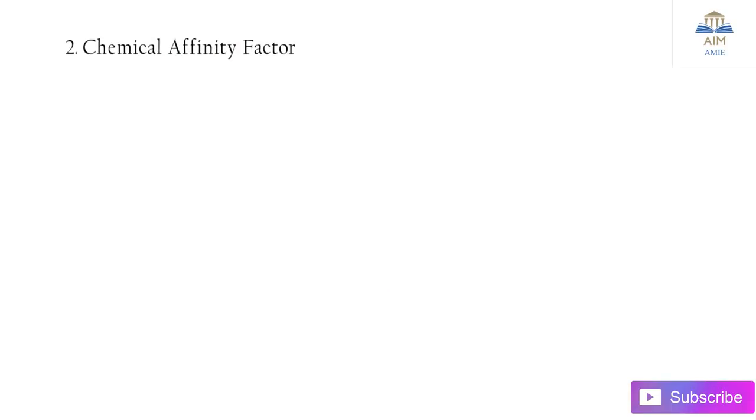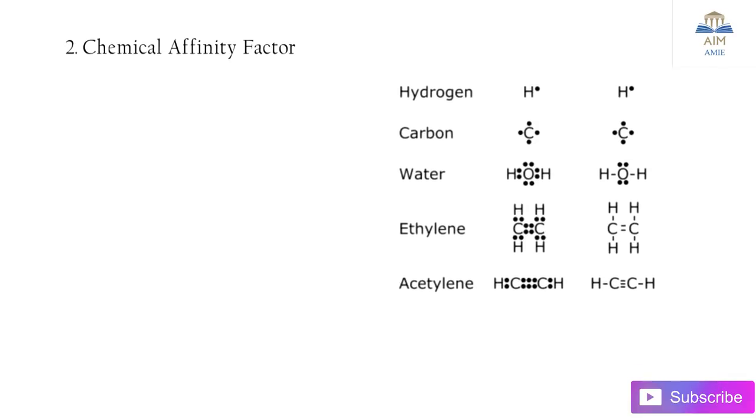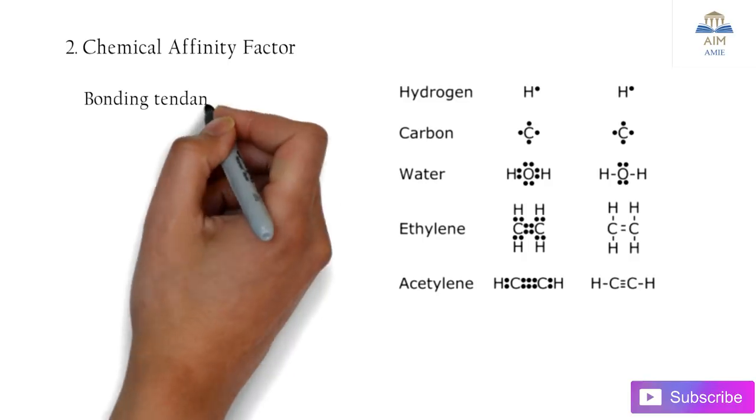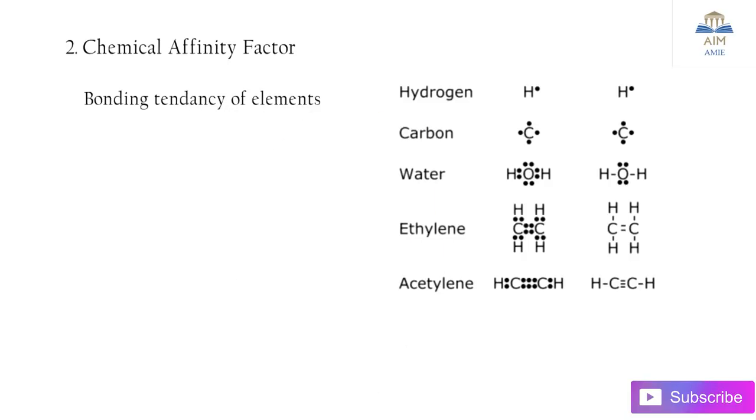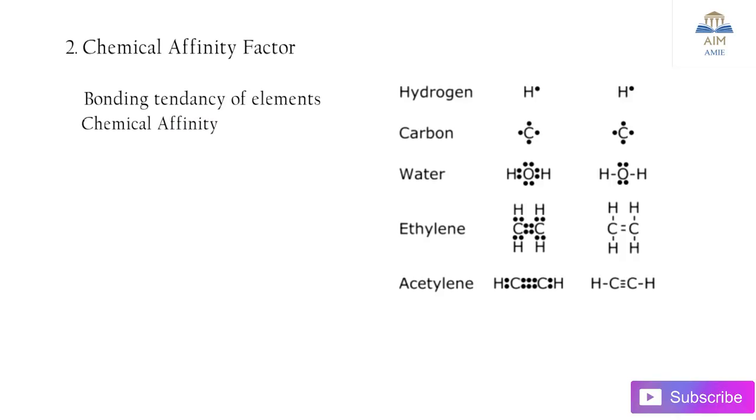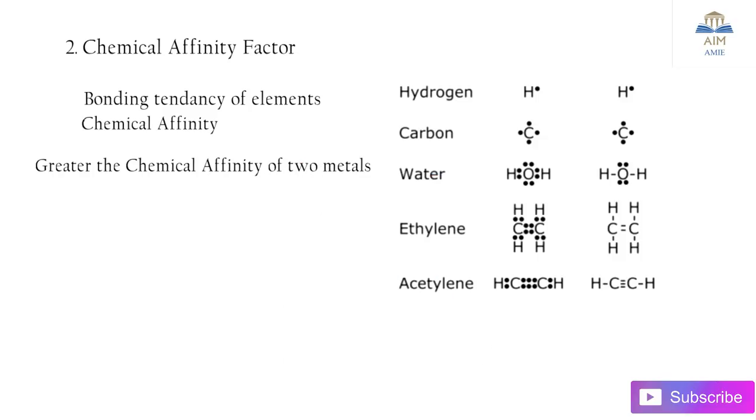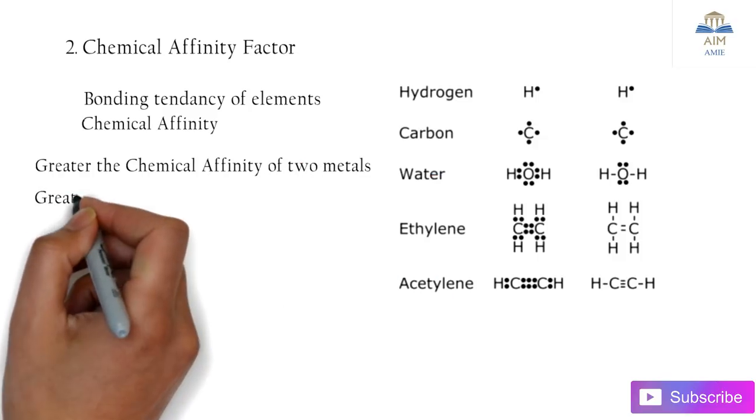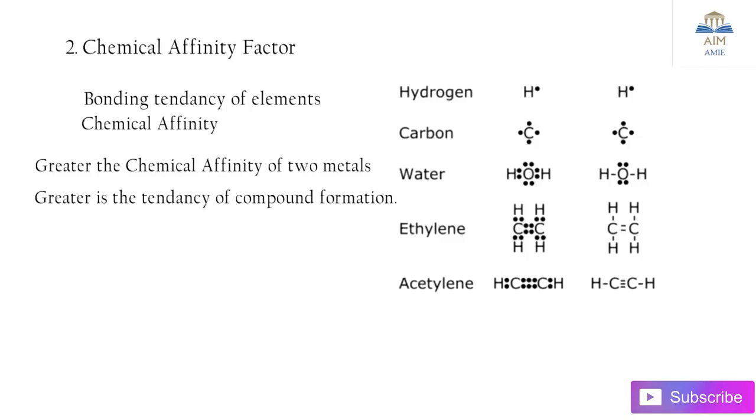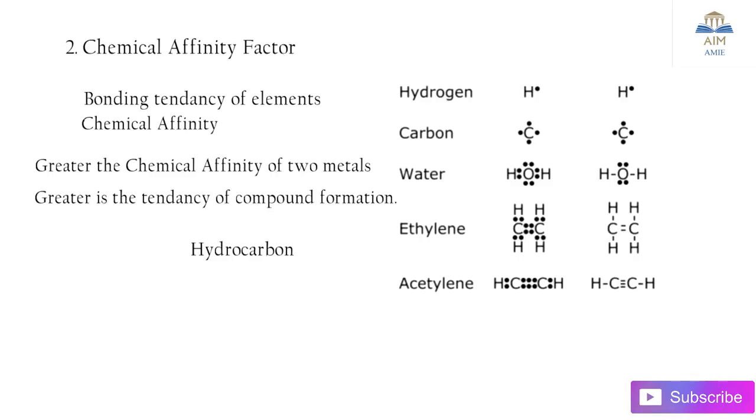Next is the chemical affinity factor. Chemical affinity factor is the bonding tendency of elements. Greater the chemical affinity of two metals, greater is their tendency of compound formation, that is the solubility, such as in case of hydrocarbons.